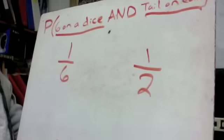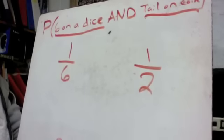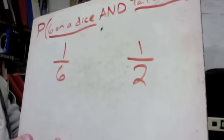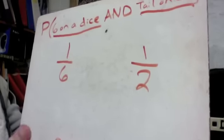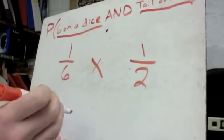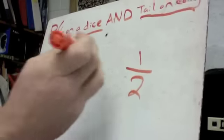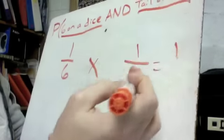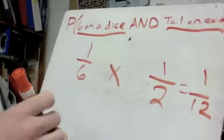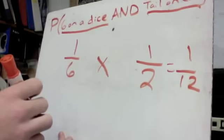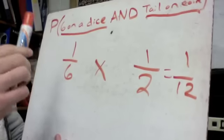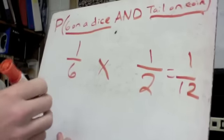Now all we have to do is multiply those together. Multiplying fractions is very easy — just multiply the numerator and multiply the denominator. One times one is one, six times two is 12. So you've got a one out of 12 chance of rolling a six on a dice and then flipping a tail on a coin.